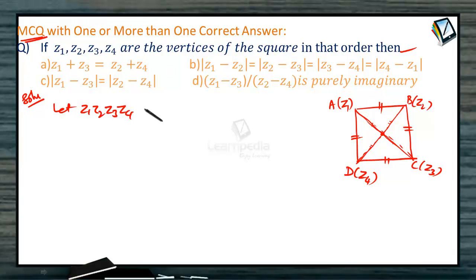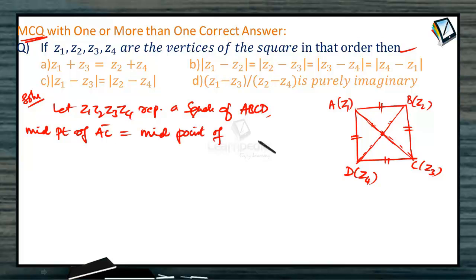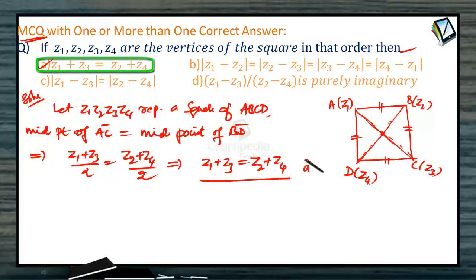Let Z1, Z2, Z3, and Z4 represent a square of sides A, B, C, D. First point is midpoint of the diagonal AC equals the midpoint of the diagonal BD. When you take midpoint of AC, that is Z1 plus Z3 by 2 equals Z2 plus Z4 by 2, which implies Z1 plus Z3 equals Z2 plus Z4. So, first option A is also correct.